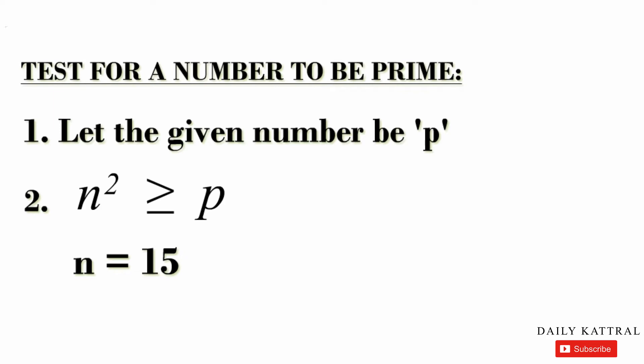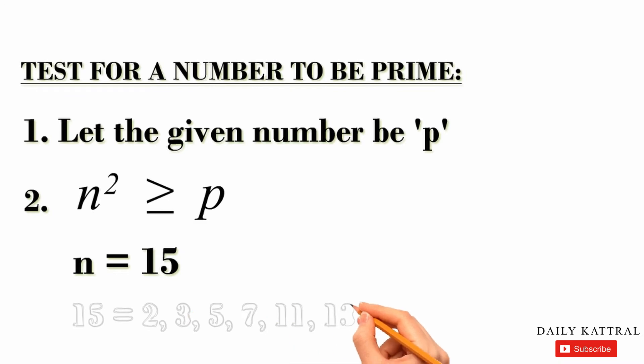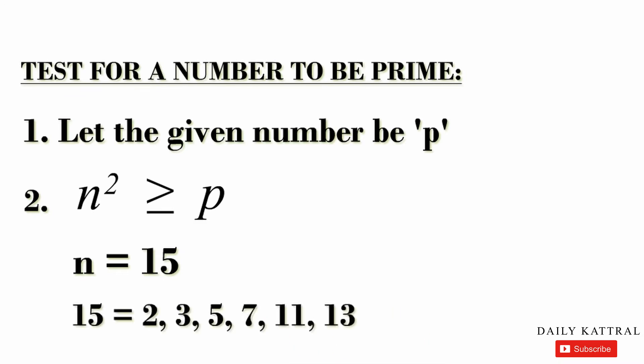Third step: we substitute N as 15. So let's list the prime numbers. The prime numbers are: 2, 3, 5, 7, 11, 13. So all the prime numbers less than or equal to 15.